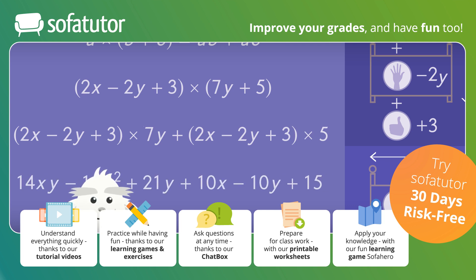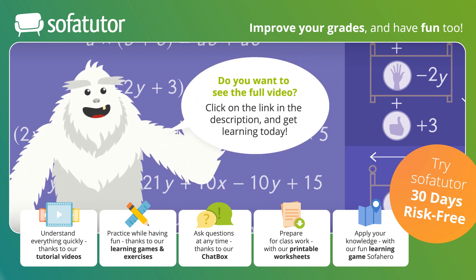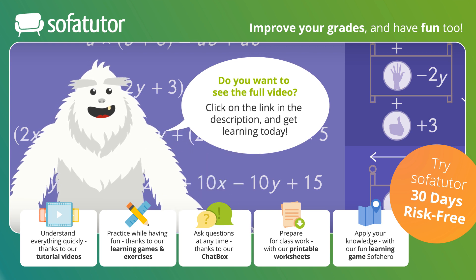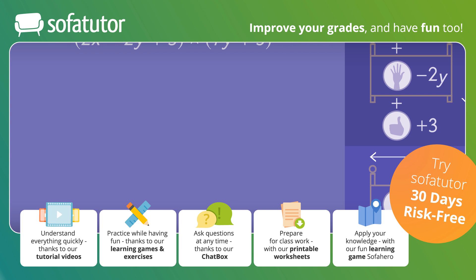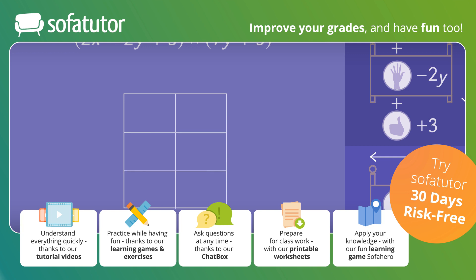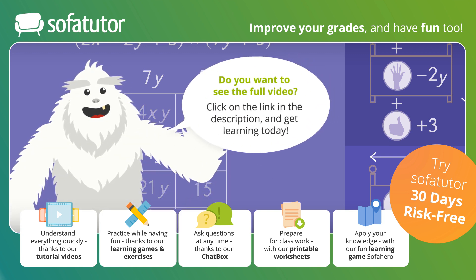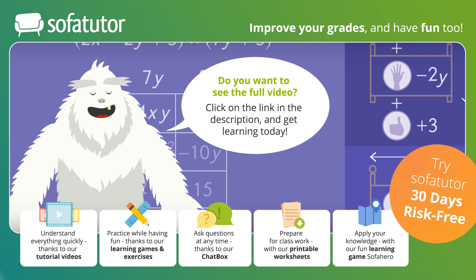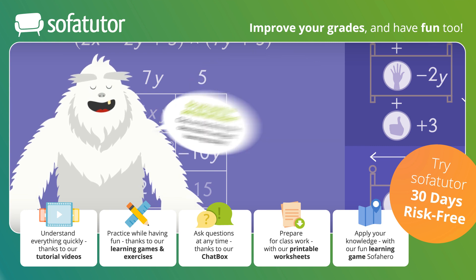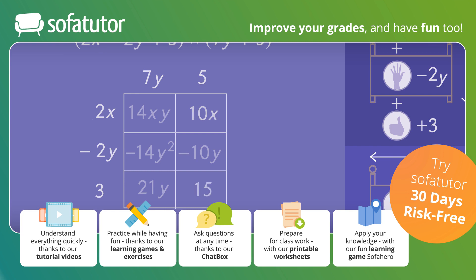Now add both of the results together. As always, write it in standard form. You can also use the area model — this time, set it up with three rows and two columns. Watch out for the negative signs when you calculate the area for each rectangular section and also when you combine like terms. The product of the two polynomials is negative 14y squared plus 14xy plus 11y plus 10x plus 15.